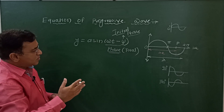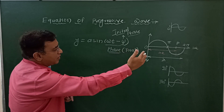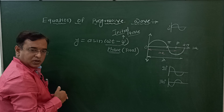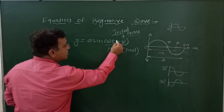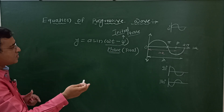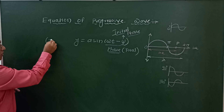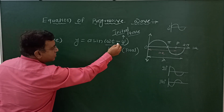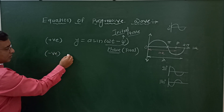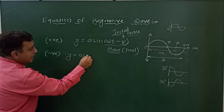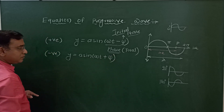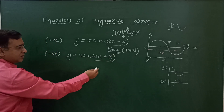When this wave is traveling along the positive x direction, the equation is y equals a sine of omega t minus phi. When it is traveling along the negative x direction, the equation becomes y equals a sine of omega t plus phi. Once again: omega t plus phi is the total phase, and phi is the initial phase.